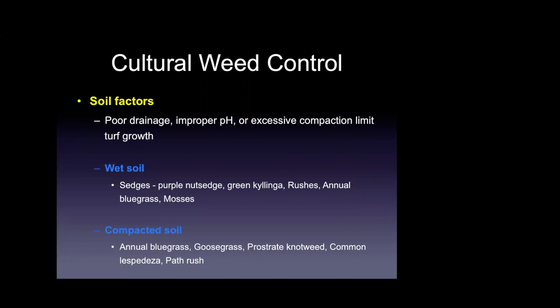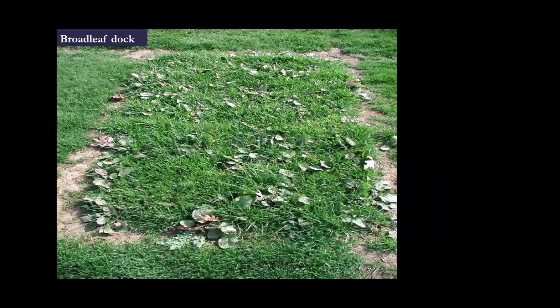For winter weeds, Poa annua also likes wet soils and will thrive in poorly drained areas. Making modifications in watering frequency, improving drainage, relieving compaction through core aeration, and promoting grass health can all help reduce weed populations in your turfgrass.